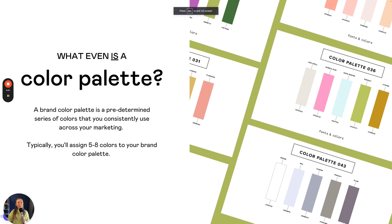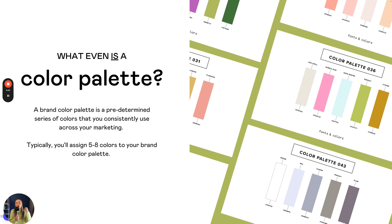So what even is a color palette? A brand color palette is a predetermined series of colors that you consistently use across your marketing — the colors on your website, social media, print materials, signage, or even a pop-up booth tablecloth. All of these things are part of your color palette. Most importantly, it's a predetermined series: you choose your colors once and then do your very best not to stray from them.